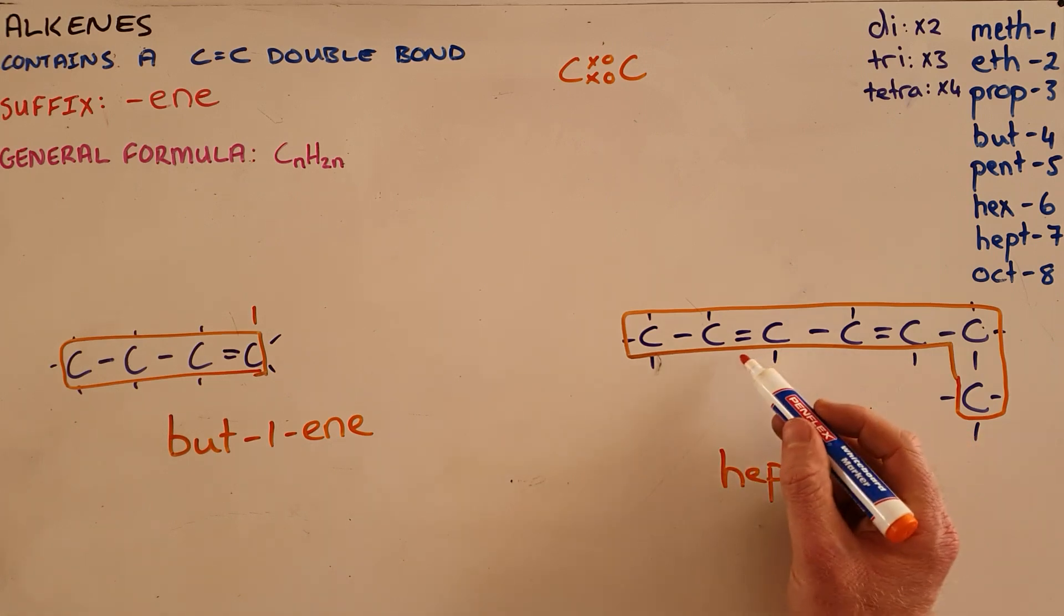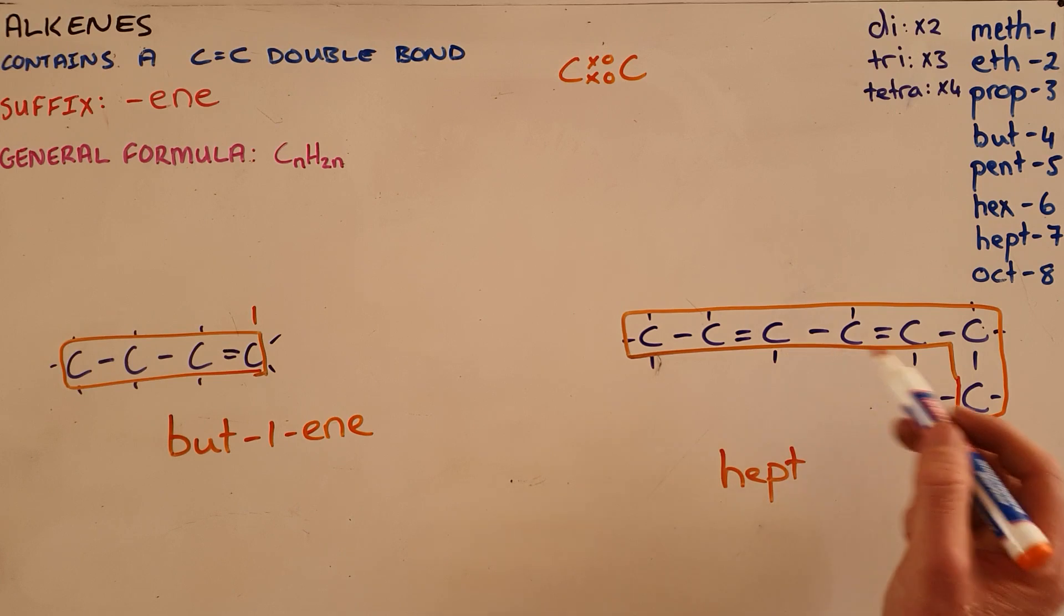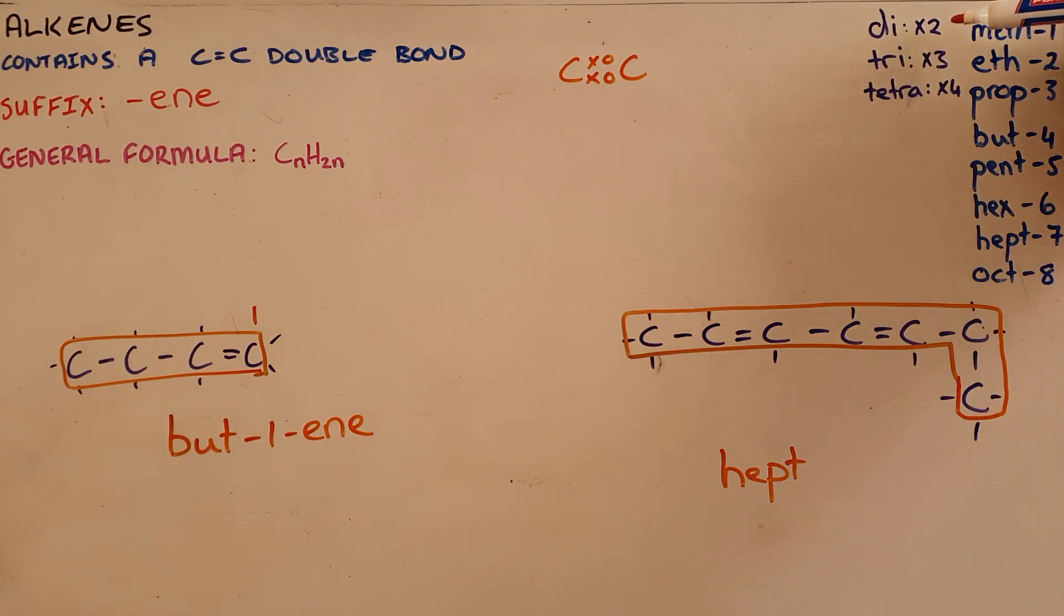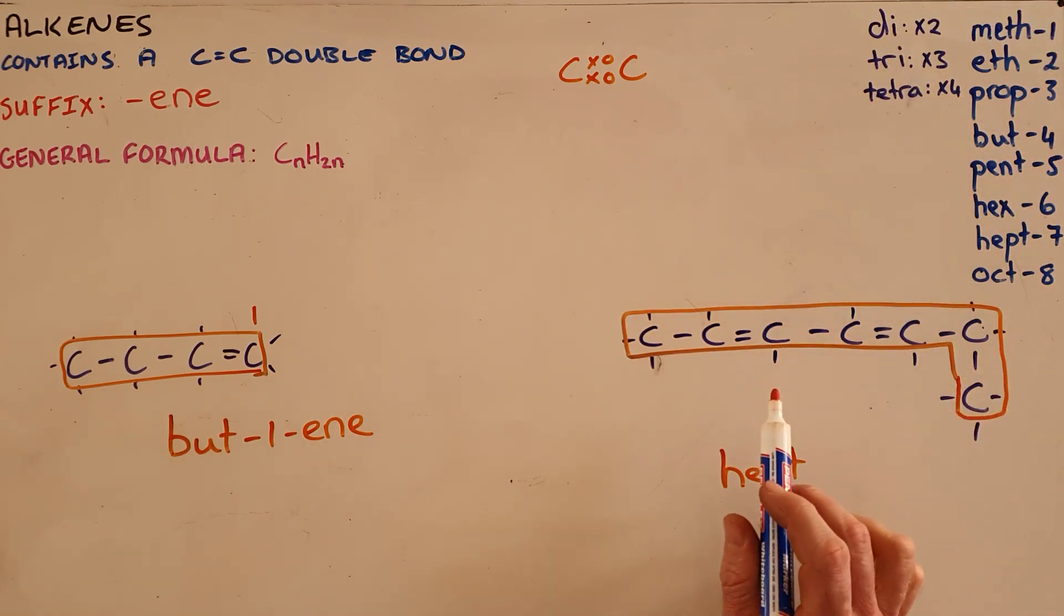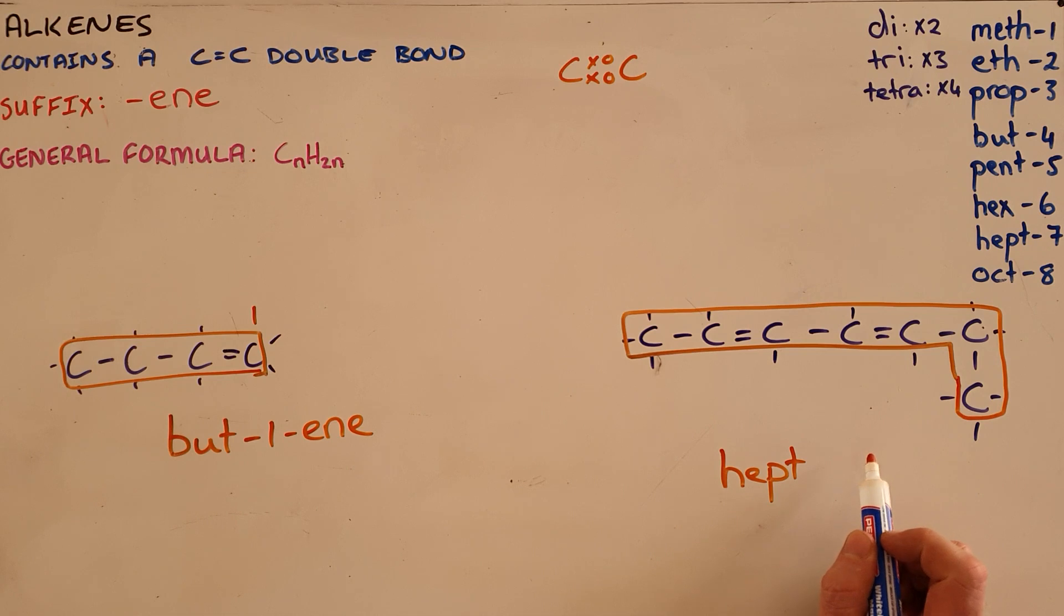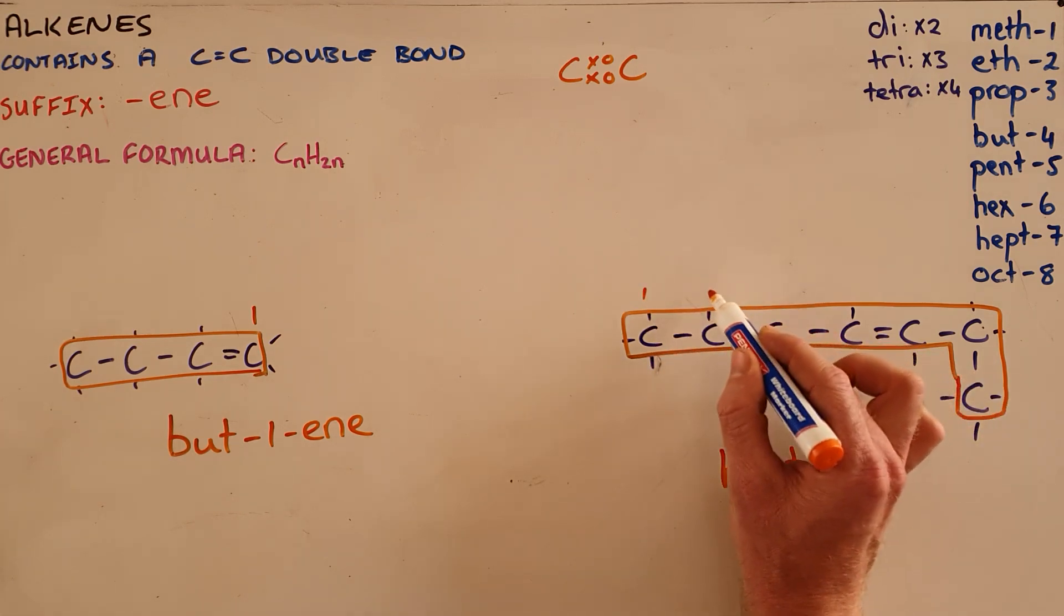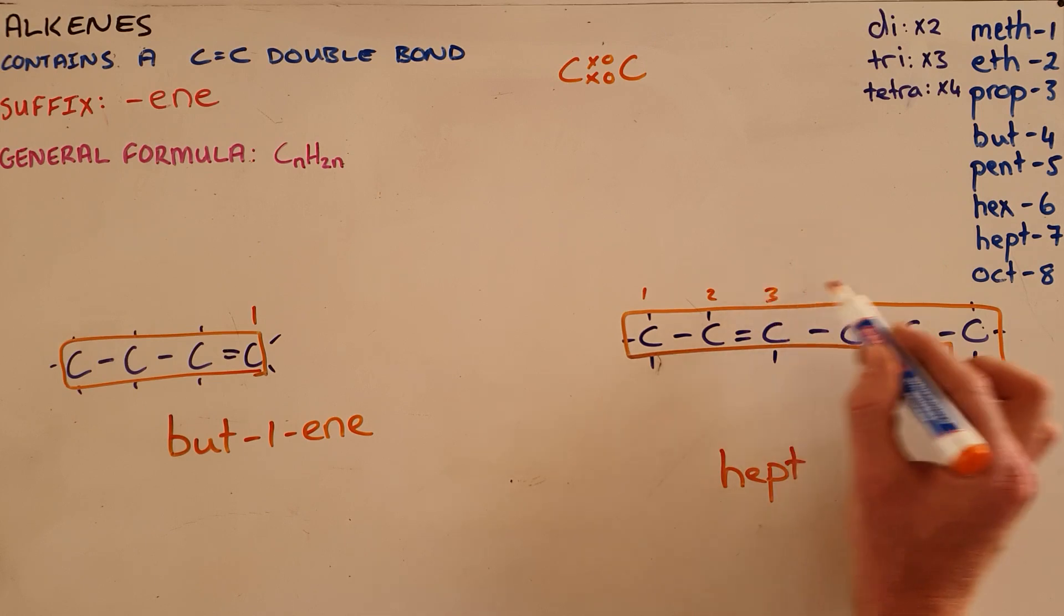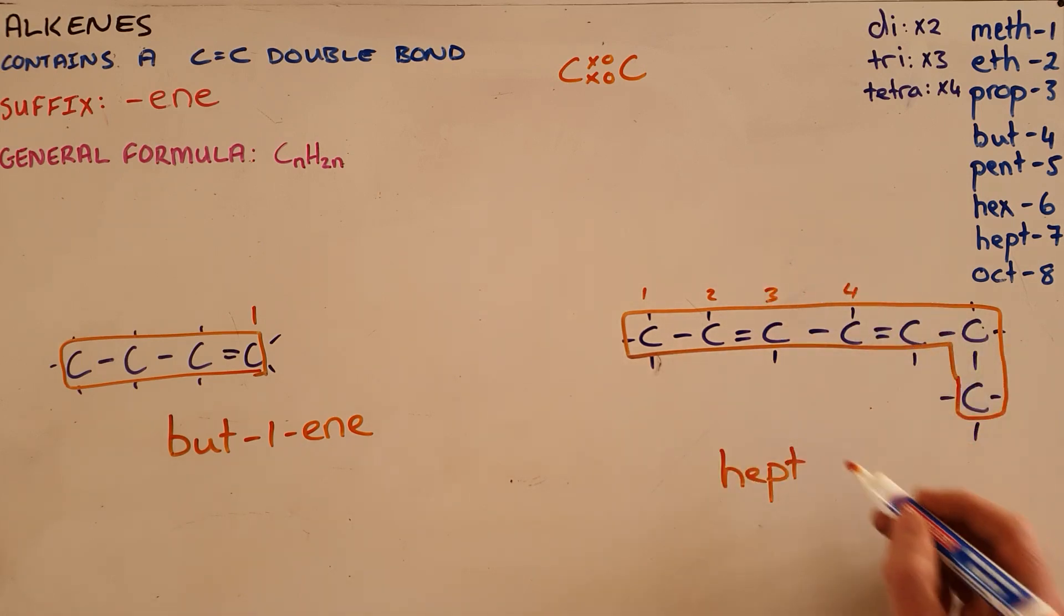It contains two double bonds, so it gets the suffix E-N, but we indicate multiple functional groups with a prefix DI, TRI, or TETRA. This would be DI-EN. We must number this and indicate the position of those double bonds, choosing to number from the side that makes those numbers as small as possible.